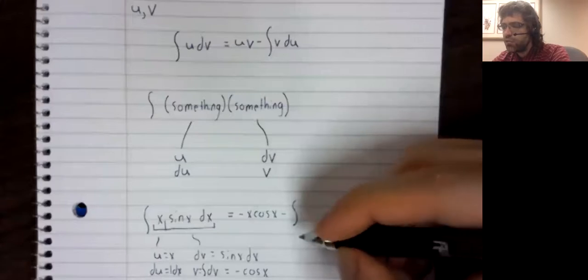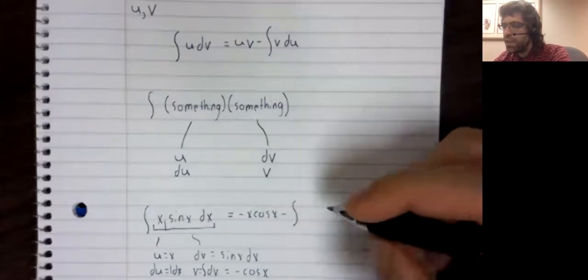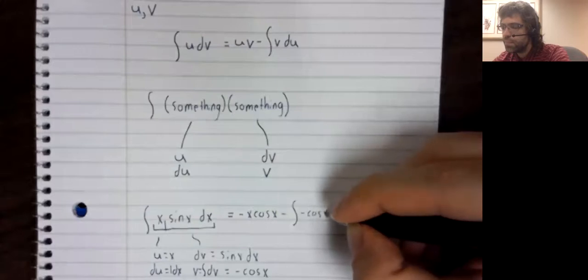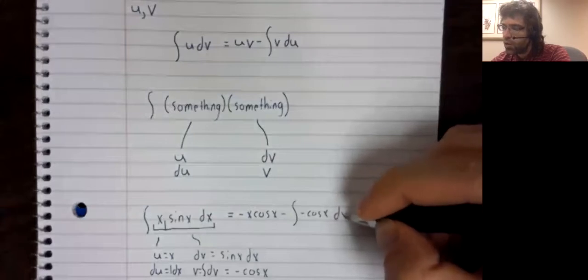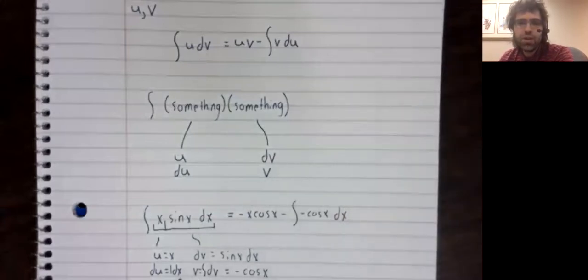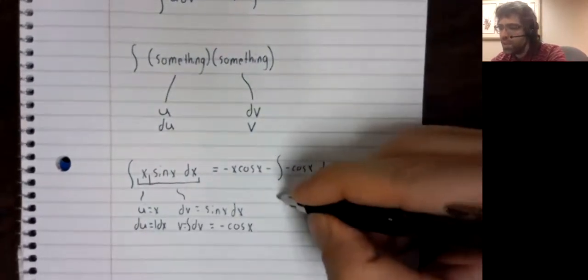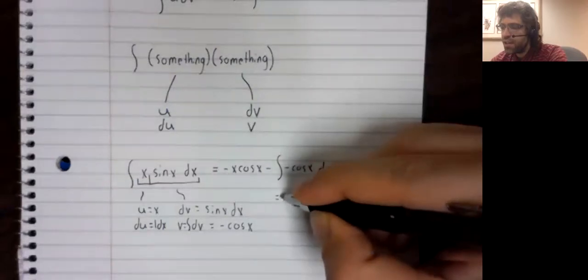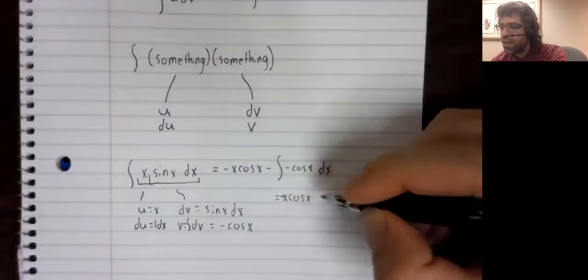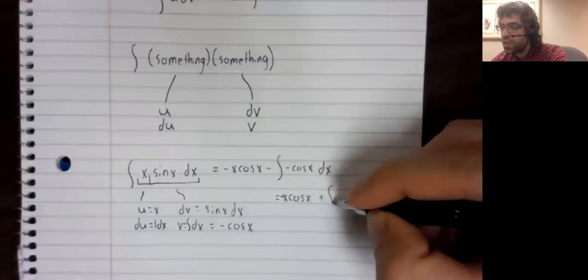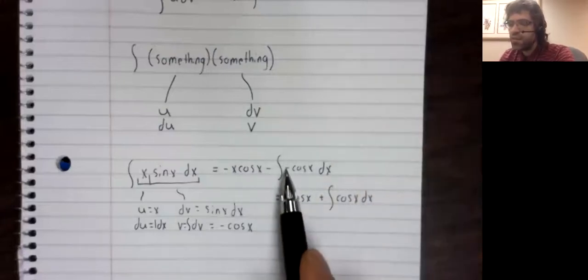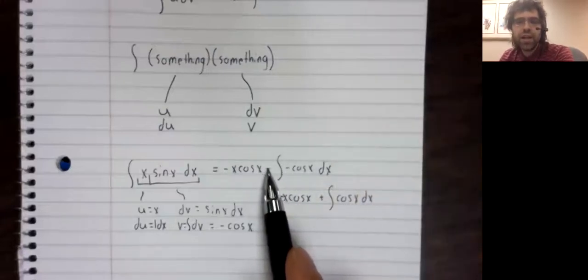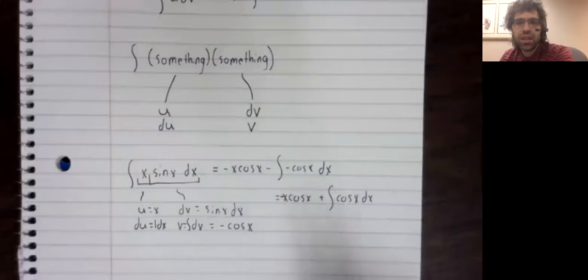Minus the integral of V. In fact, dU. You have to be, dU. We don't bother writing the one. dU equals dX. So this is negative X times the cosine of X, plus the integral of the cosine of X. This negative sign can be pulled outside and then it cancels with this negative sign.